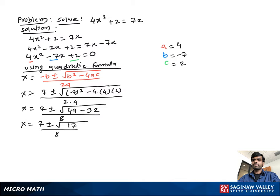Now we can write it into two parts. We get x equal to 7 plus square root 17 over 8, or x equal to 7 minus square root 17 over 8, and this is our final answer.